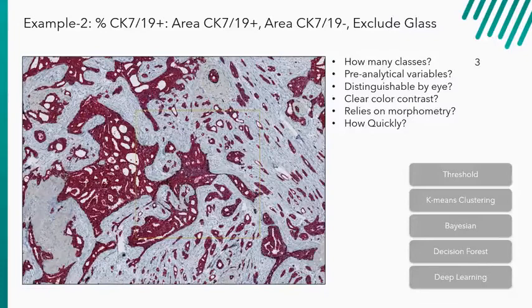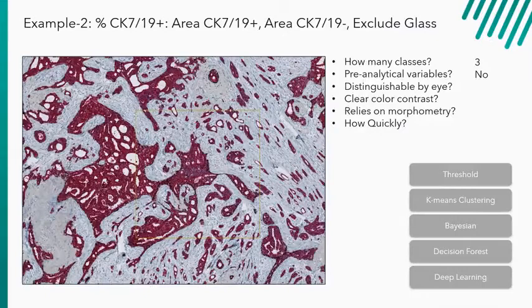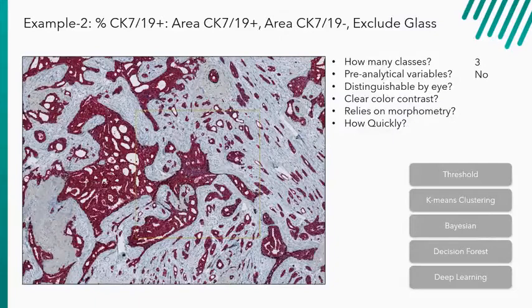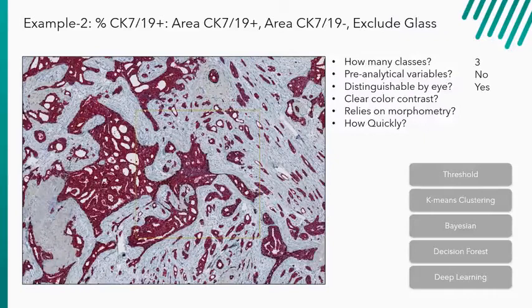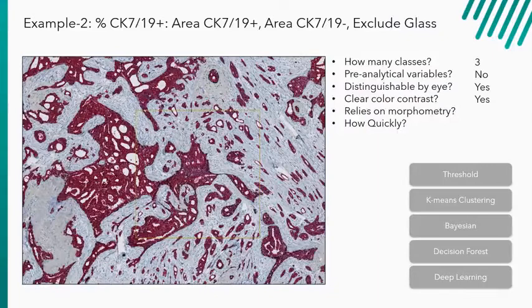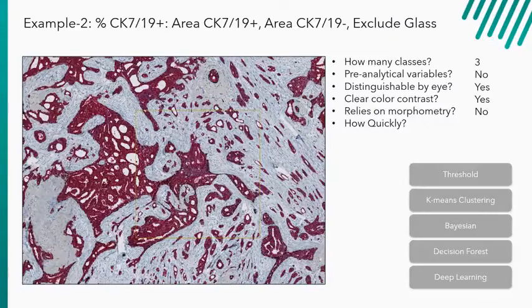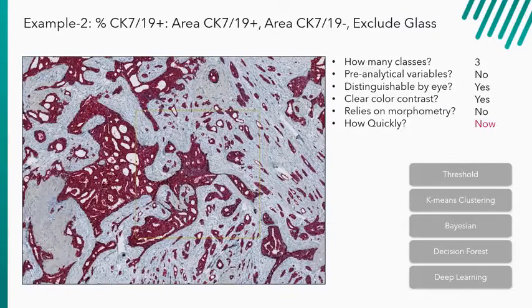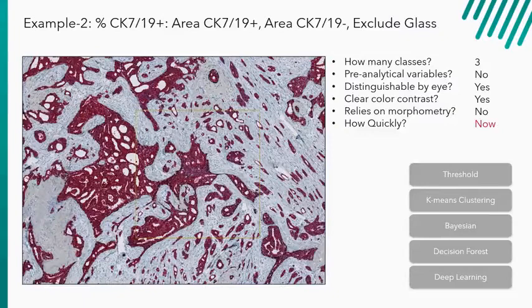Is there any pre-analytical variability? In this case, no. The staining is pretty consistent and we don't have a whole lot of variability across our sample. We have a clear contrast and a great signal to noise. I'm not worried about any pre-analytical variables for this specific sample. Is it distinguishable by eye? Yes, we have a CK7, 19 marker for it. Is there a clear color contrast? Yes, we have an easily distinguishable compartment. No need to worry about that. Does it rely on morphology? No, because we have that clear color contrast in the marker, you do not need to use the texture context of those compartments. How quickly do I need it? I'd like it now. If I had just separated tissue and glass, and this was just the same study, and I wanted to now distinguish these compartments, and I spent the time working up these assays, I should get it pretty readily.